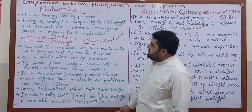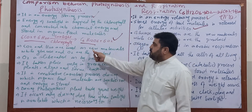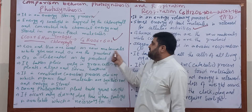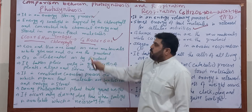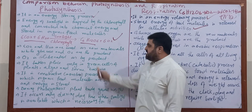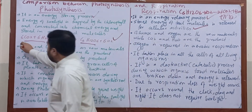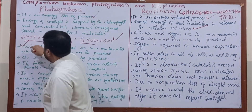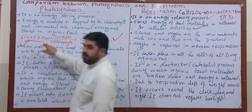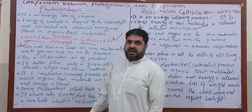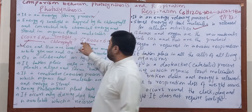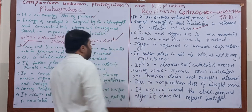In photosynthesis, carbon dioxide and water are used as raw materials, while glucose and oxygen are produced. So the raw materials here are carbon dioxide and water, and glucose is produced.